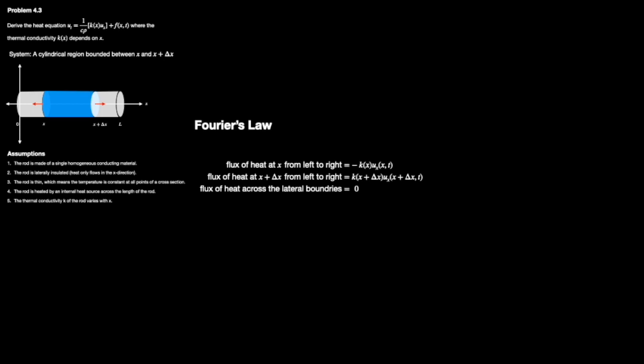Given assumption 2 says that the lateral boundaries are insulated, that means the flux across the boundaries has to also be zero.